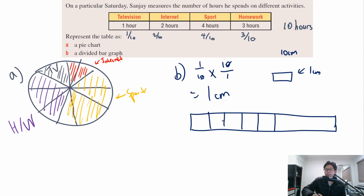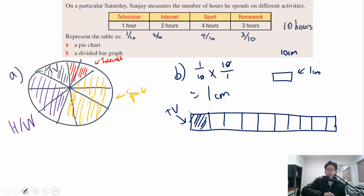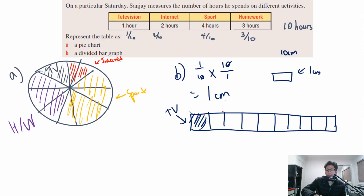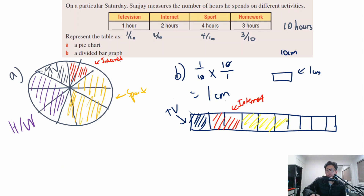I'll divide my rectangle into 10 boxes. Television is blue — 1 box. Internet is red — 2 boxes. Sport is yellow — 4 boxes. Homework is purple — 3 boxes.